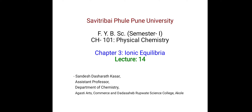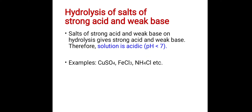Welcome to the 14th lecture of the chapter ionic equilibrium. Today we are going to study the hydrolysis of salts of strong acid and weak base. Salts of strong acid and weak base on hydrolysis give us strong acid and weak base. In that case the acid is strong while the base is weak, therefore the solution is acidic, and we know that whenever a solution is acidic its pH is less than 7.